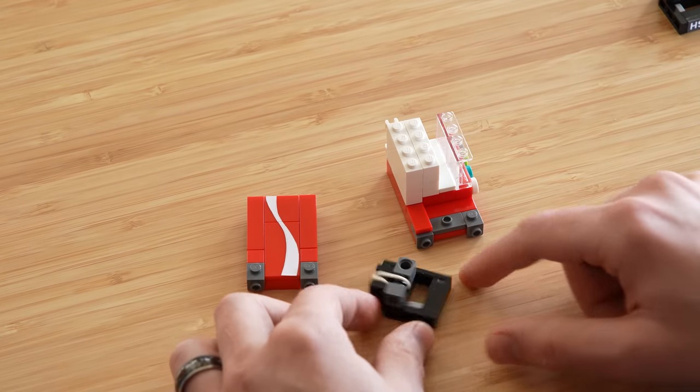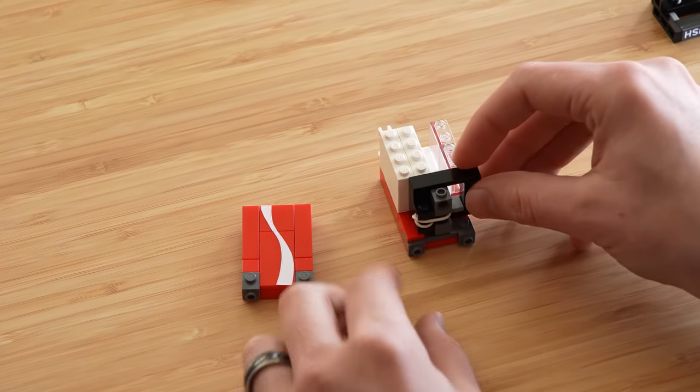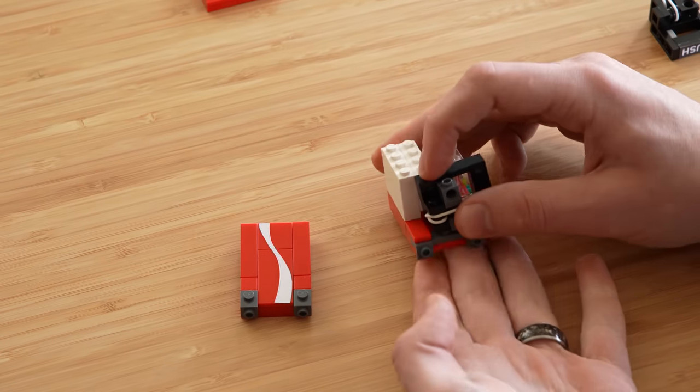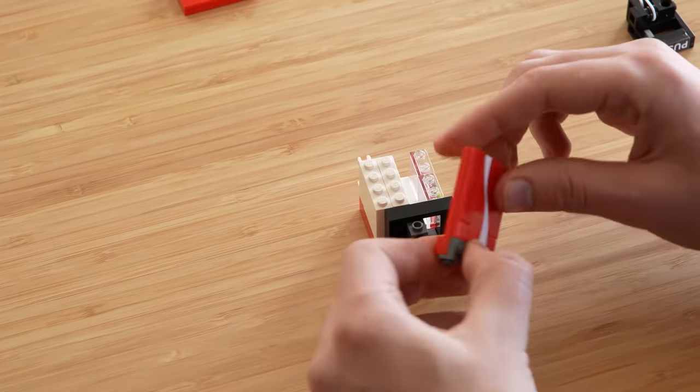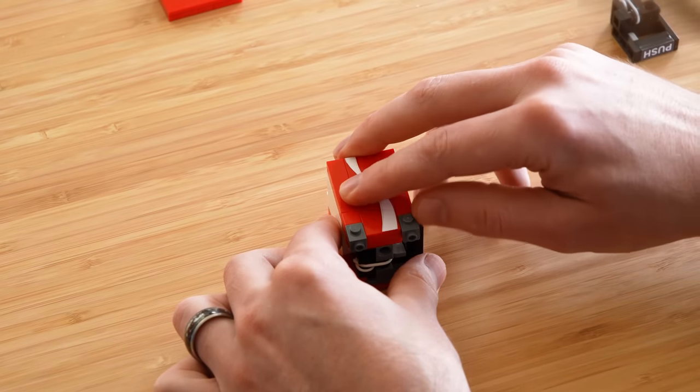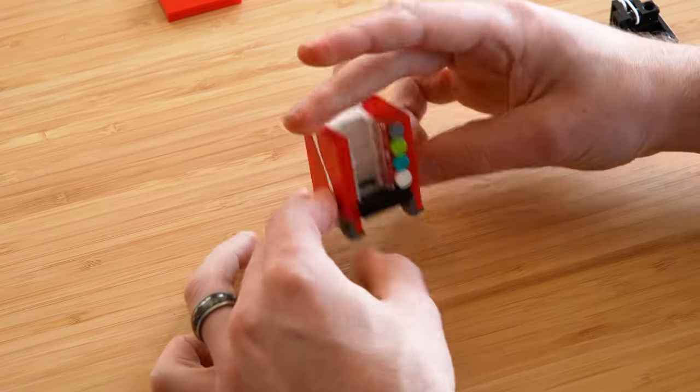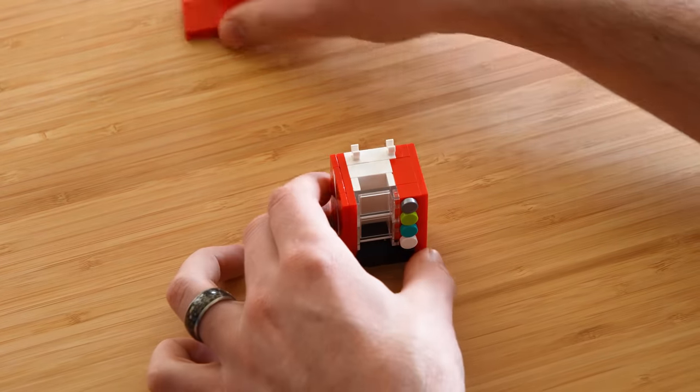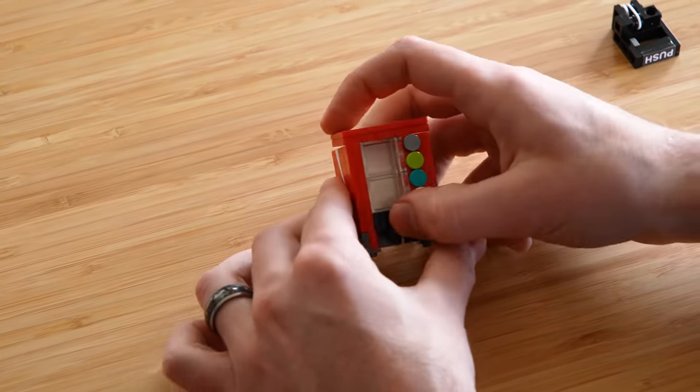And now for the last step of just assembling this, which is very simple, just don't explode it like I did. We're going to put that piece right on there. And we're going to put this piece right on the top down, right, right like that. We've got our vending machine. And then the lid goes on top and the sodas will go inside there.